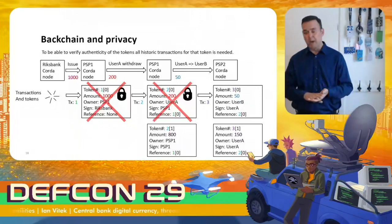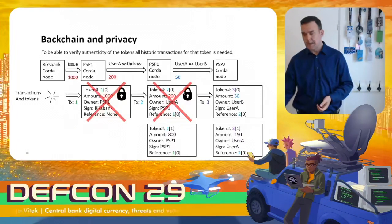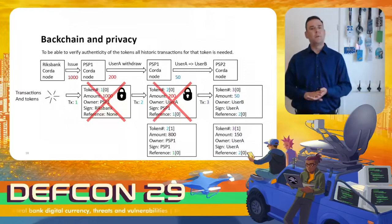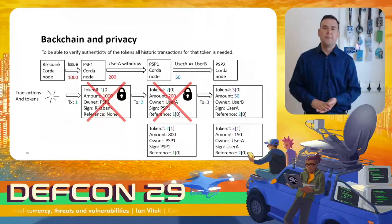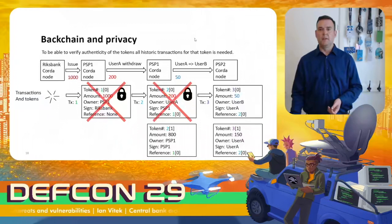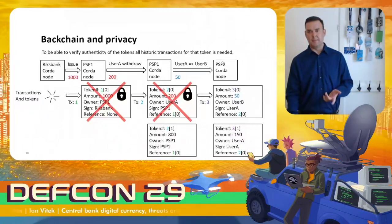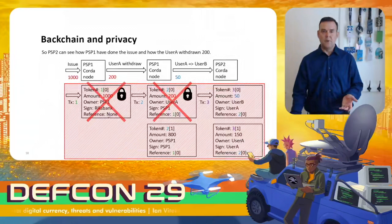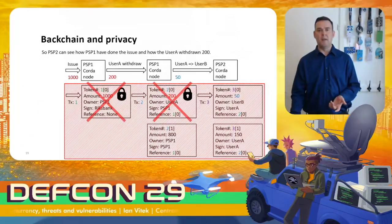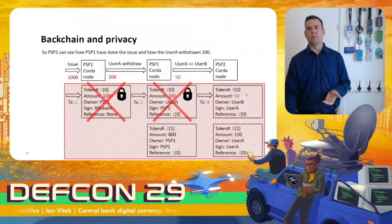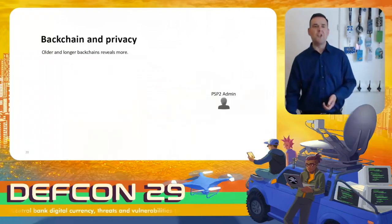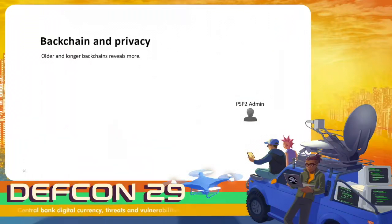Now we move over to privacy problems. As discussed before about the backchain: to verify the authenticity of all tokens, all historic transactions for that token are needed. For PSP2 to verify a token, it needs all the historic transactions. PSP2 can see how PSP1 made an issue and how user A withdrew 200 before transferring a token to a user on PSP2. But older and longer backchains reveal more.